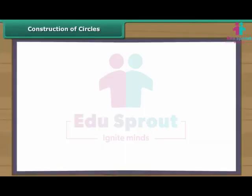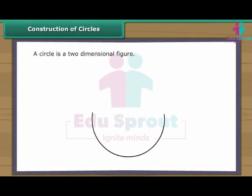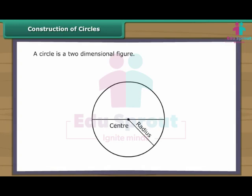Construction of Circles. A circle is a two-dimensional figure. Every circle has a centre. The distance between the centre and the boundary of a circle is known as its radius. The line segment through the centre of a circle with its end points touching the boundary of the circle is known as the diameter of the circle. The diameter of a circle is twice its radius.